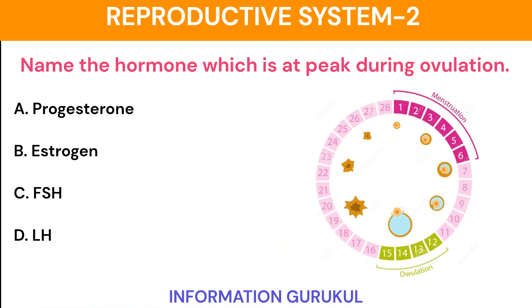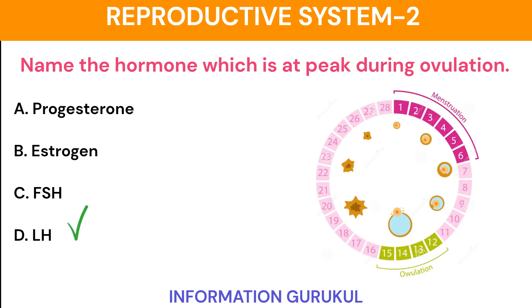Name the hormone which is at peak during ovulation. LH (Luteinizing Hormone).